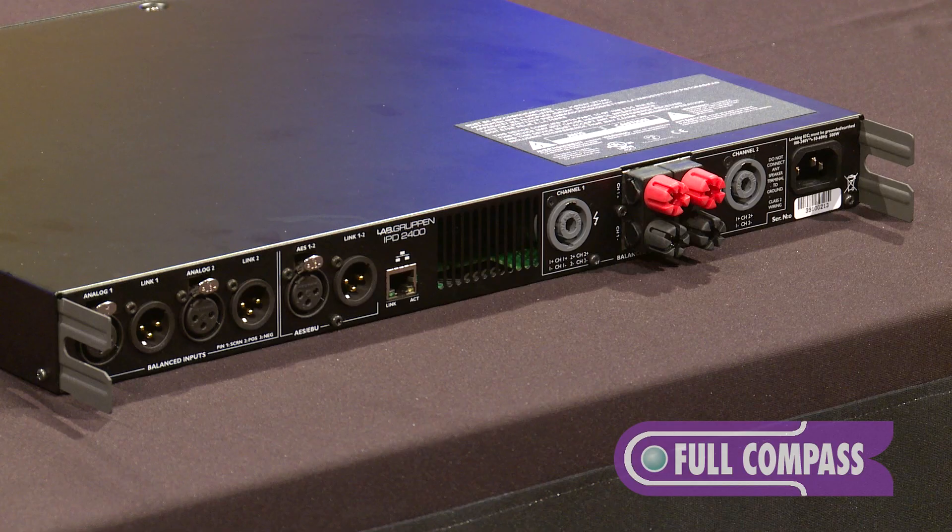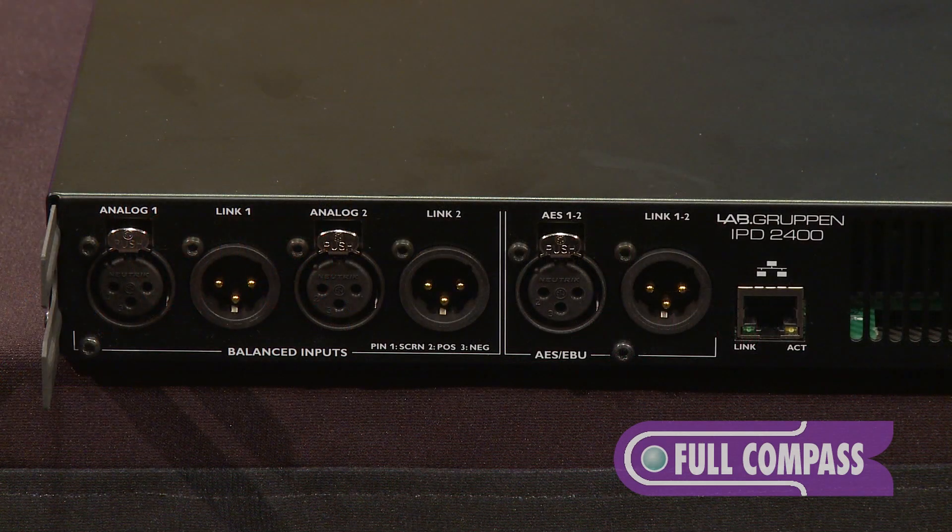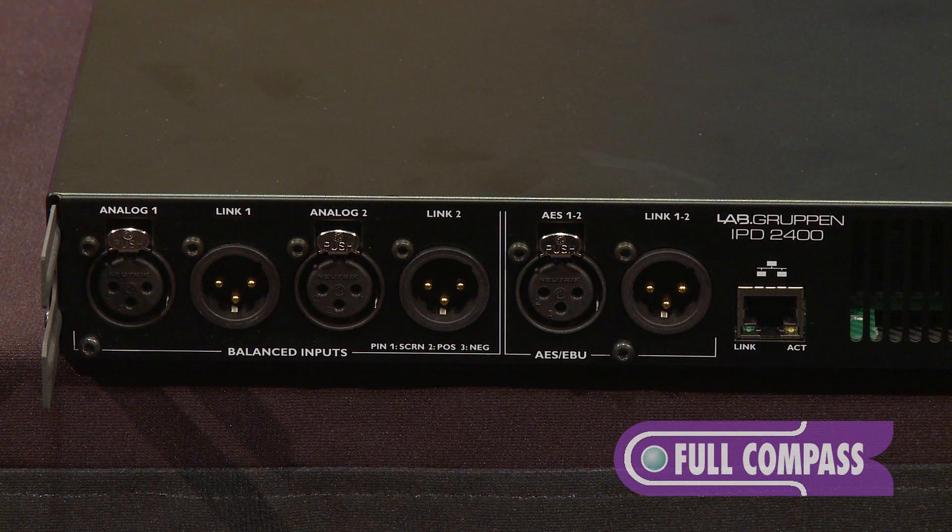A couple of the features on the IPD amplifier hardware, we have speak on output as well as binding posts, universal power supply, standard IEC cable, AES inputs as well as analog inputs. So you have your two analog inputs with link output as well as your AES input, then your network connection.